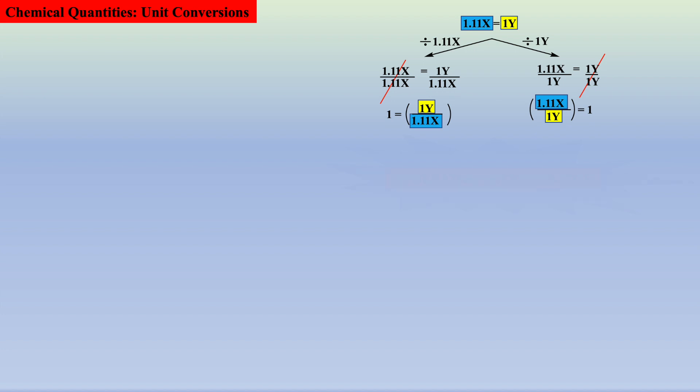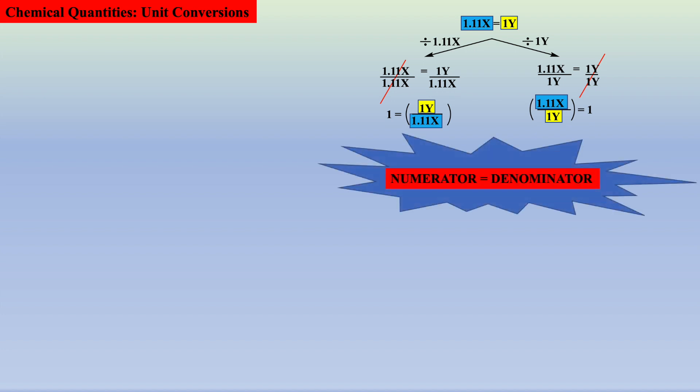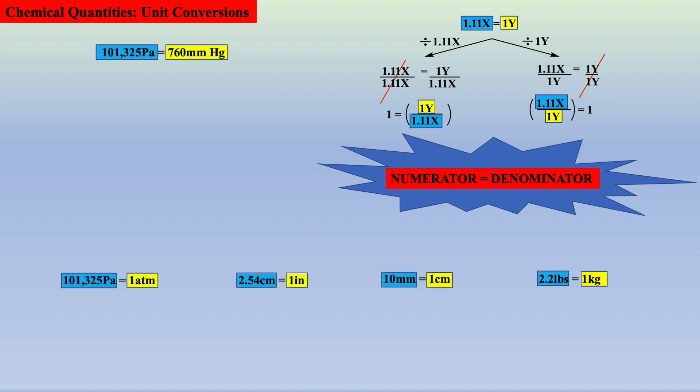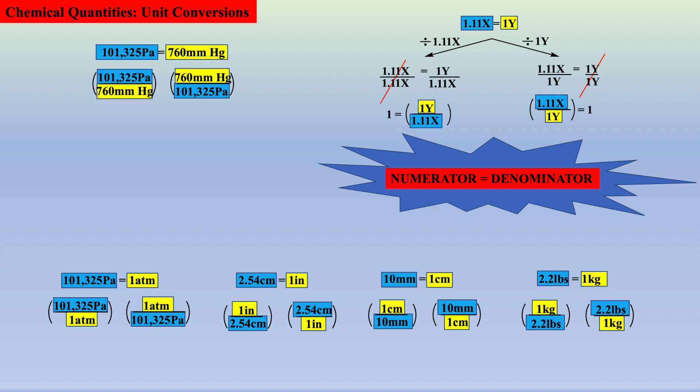The key is the numerator must equal what is in the denominator, which means we do not have to derive the two resultant conversion factors from any definition — we can simply write them by inspection. Remember that whatever is in the numerator has to equal what is in the denominator when writing a conversion factor.